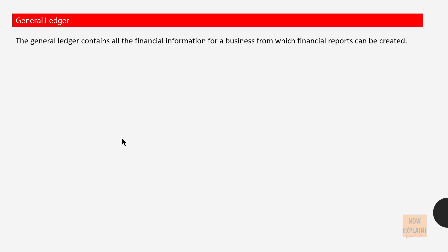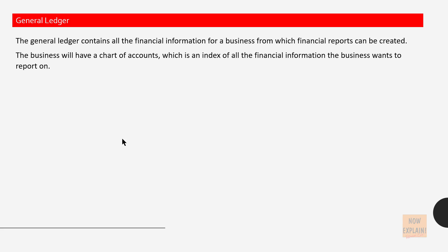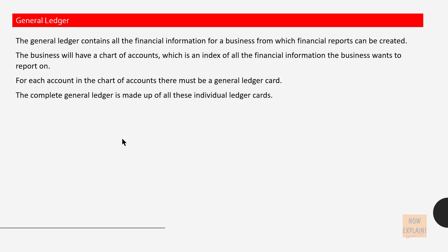The general ledger contains all the financial information for a business from which financial reports can be created. The business will have a chart of accounts, which is an index of all the financial information the business wants to report on. For each account in the chart of accounts there must be a general ledger card. The complete general ledger is made up of all these individual ledger cards.